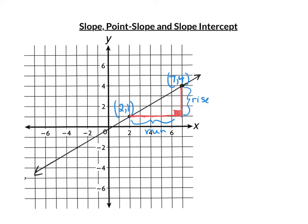So we can count the rise: one, two, three — the rise is three. And we can count the run by counting the boxes: one, two, three, four, five. The run is five.